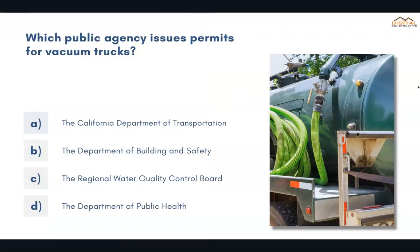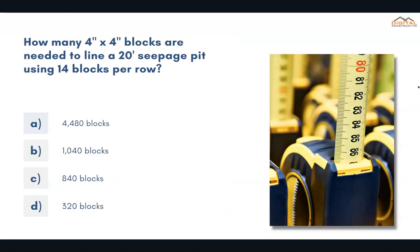Which public agency issues permits for vacuum trucks? The correct answer is D, the Department of Public Health. How many 4-inch by 4-inch blocks are needed to line a 20-foot seepage pit using 14 blocks per row? The correct answer is C, 840 blocks.